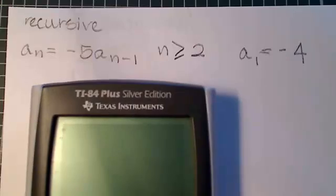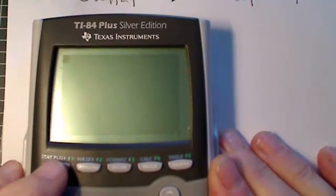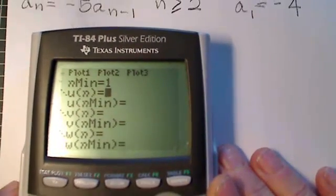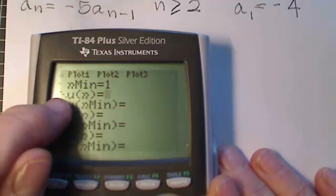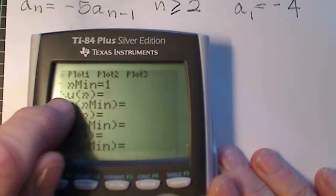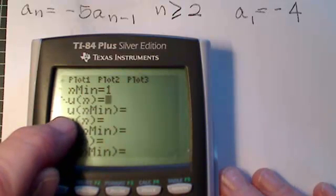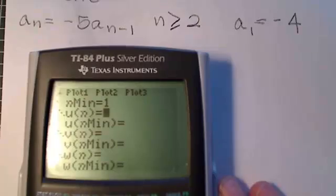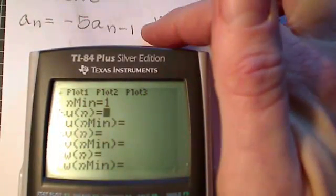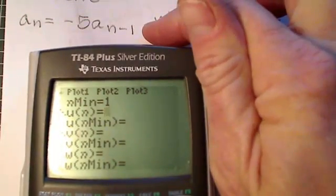I'm already in the sequence mode, so I'm going to push my y equals button. And again, we see the n min and my function for my terms. And this time we're going to have to use u of n min. So let's go ahead and put in that function, negative 5 times the previous term.